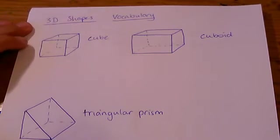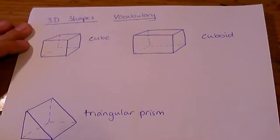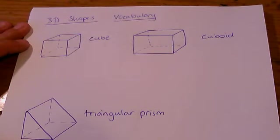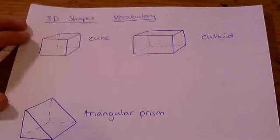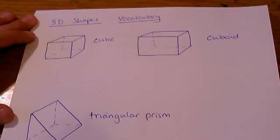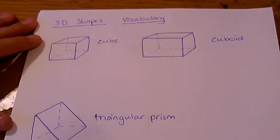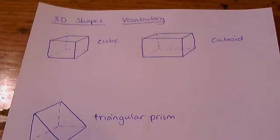So here are some common 3D shapes. A cube is a bit like a dice shape. All the sides are the same length, every face is the same size, and it is a sort of box shape. So let's have a look at how you work out the number of edges, faces, and vertices.